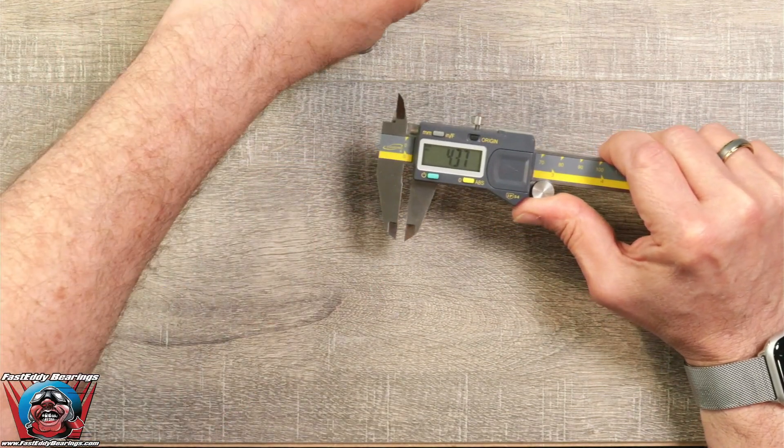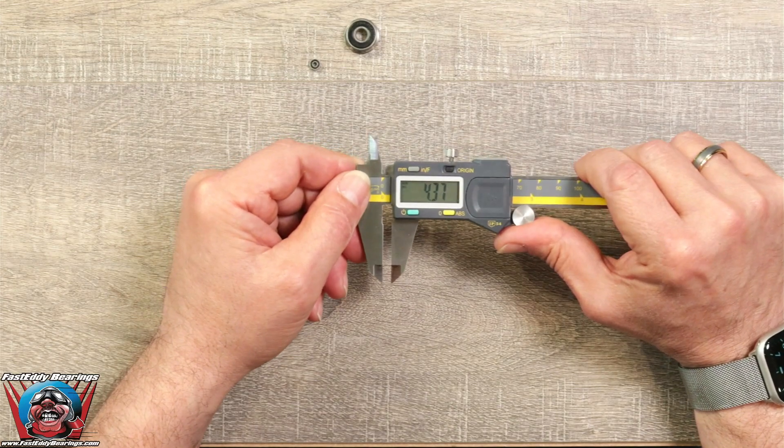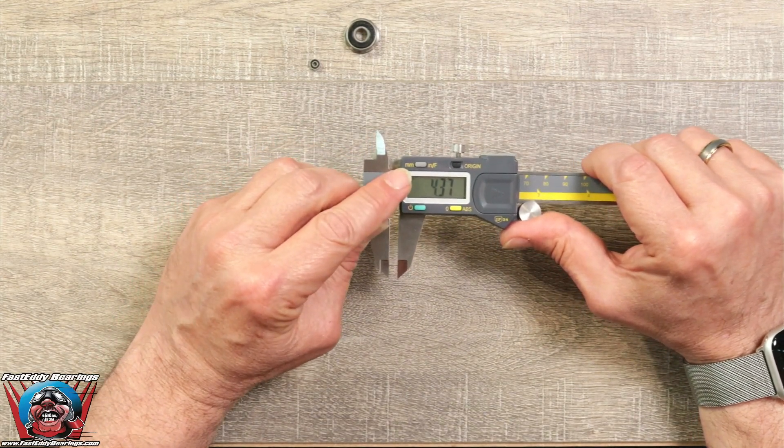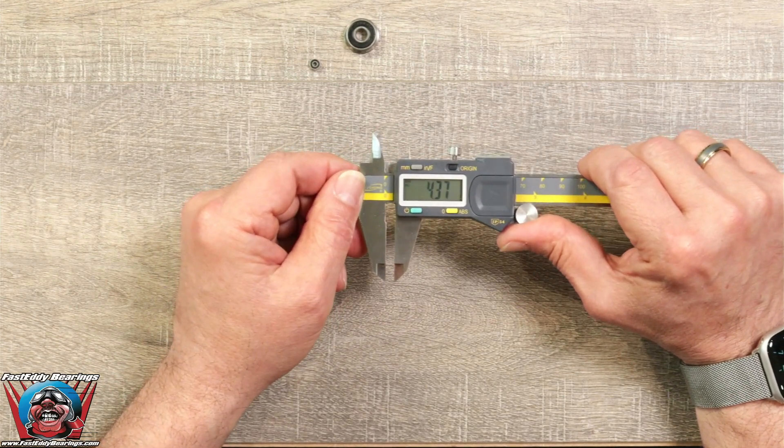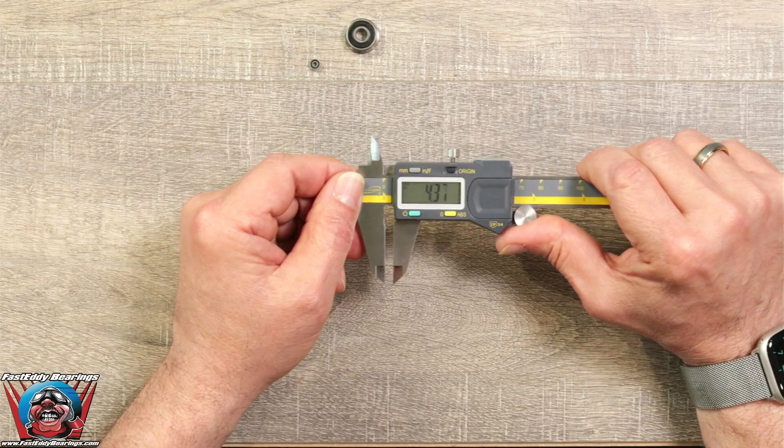If you're doing it in fractions, because some bearings are fractional bearings, you're going to want to use either your fractional inch settings on your caliper, or we also do have a conversion sheet on our website.